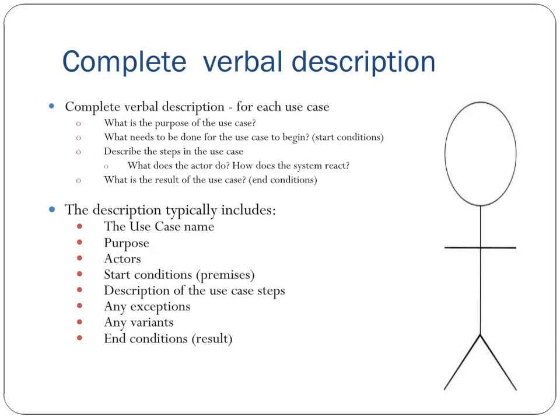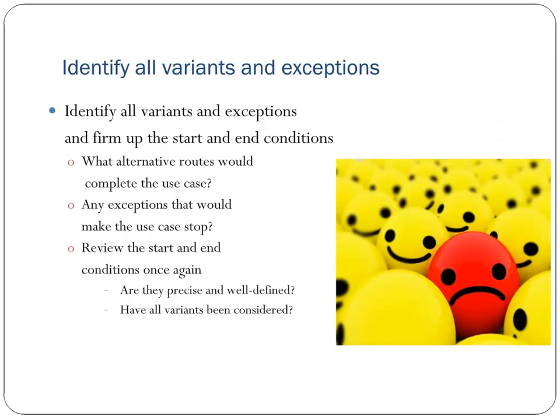Who gets information from this system? Who provides information to the system? Does anything happen automatically at a preset time? For the Complete Verbal Description of each use case, identify: what is the purpose of the use case? What needs to be done for the use case to begin? Describe the steps — what does the actor do, how does the system react, and what is the result? The description typically includes the use case name, purpose, actors, start conditions, description of steps, exceptions, variances, and end conditions. Identify all variances and exceptions and firm up the start and end conditions.